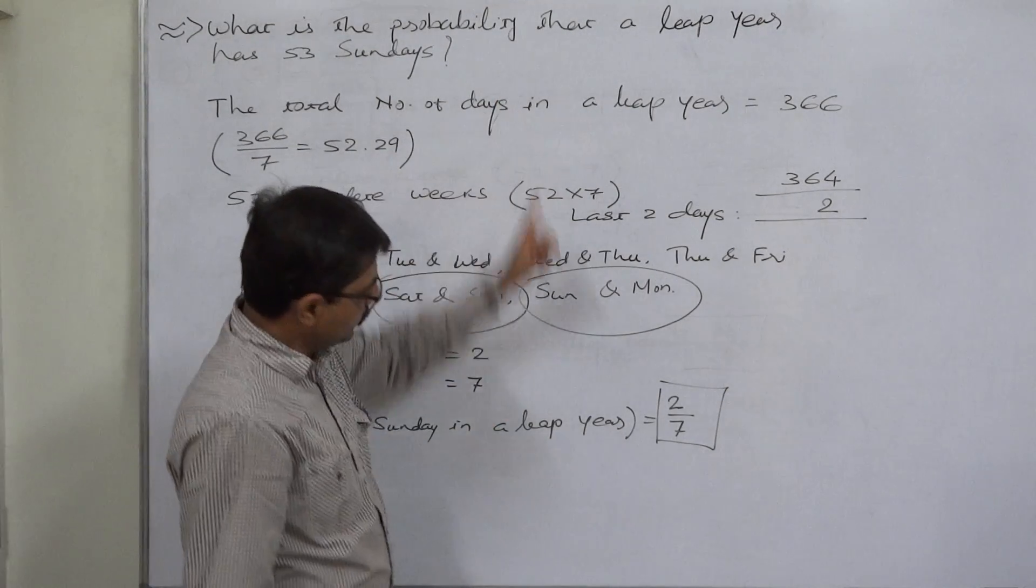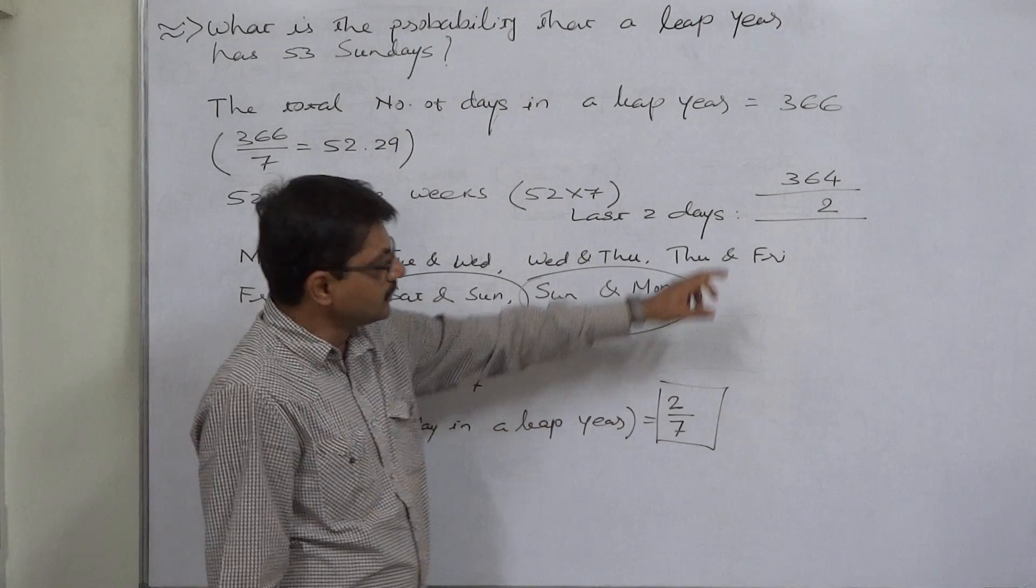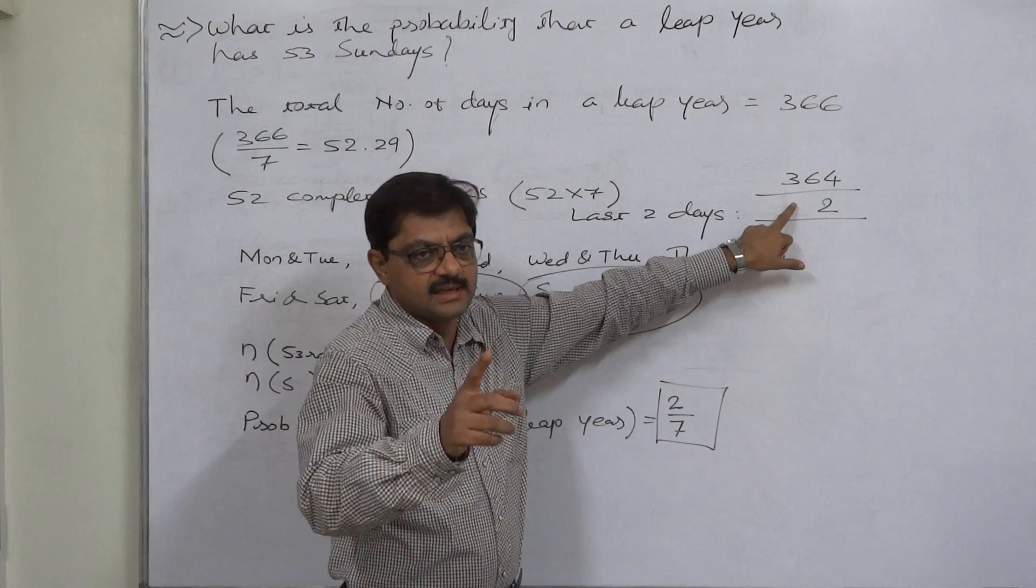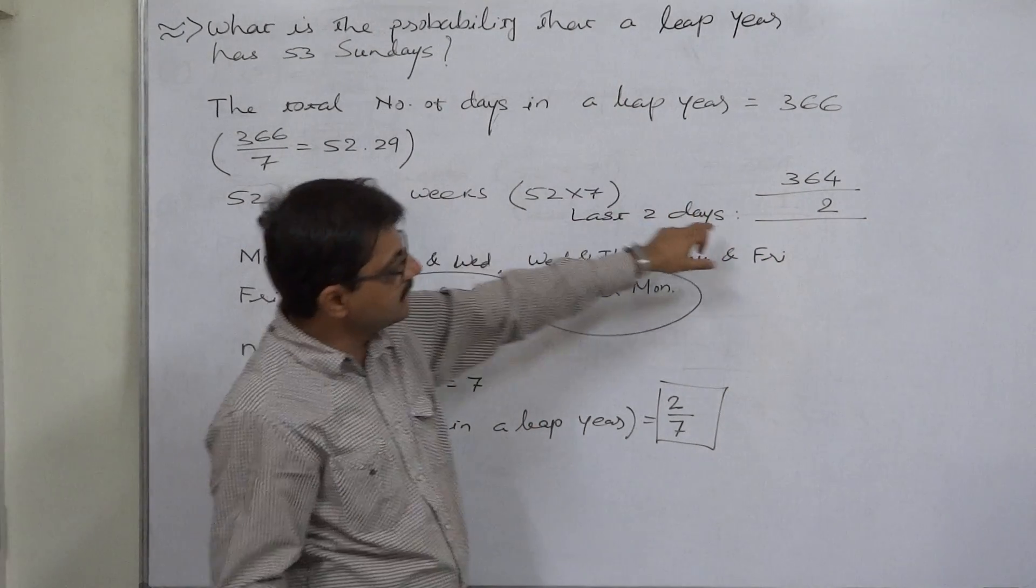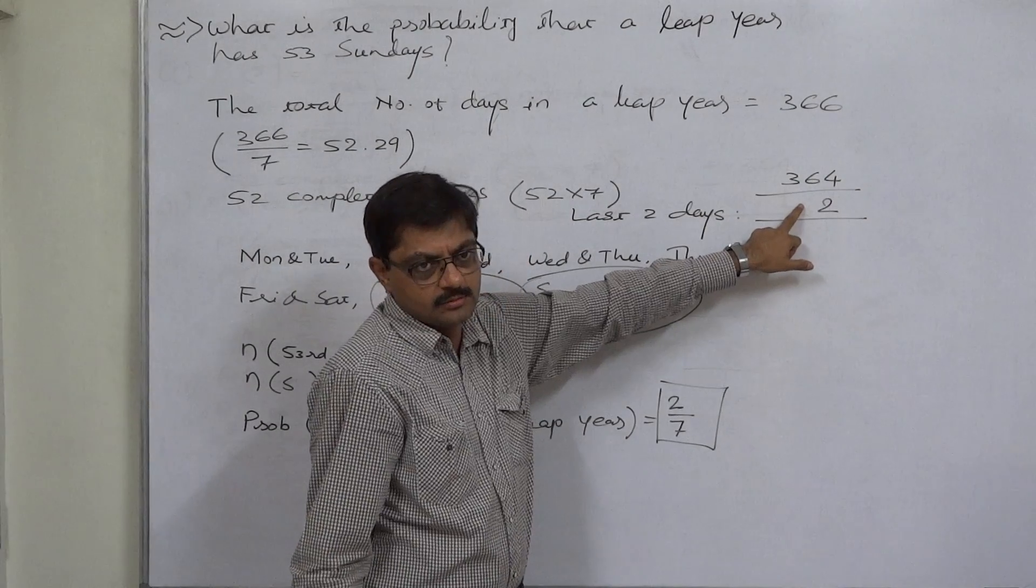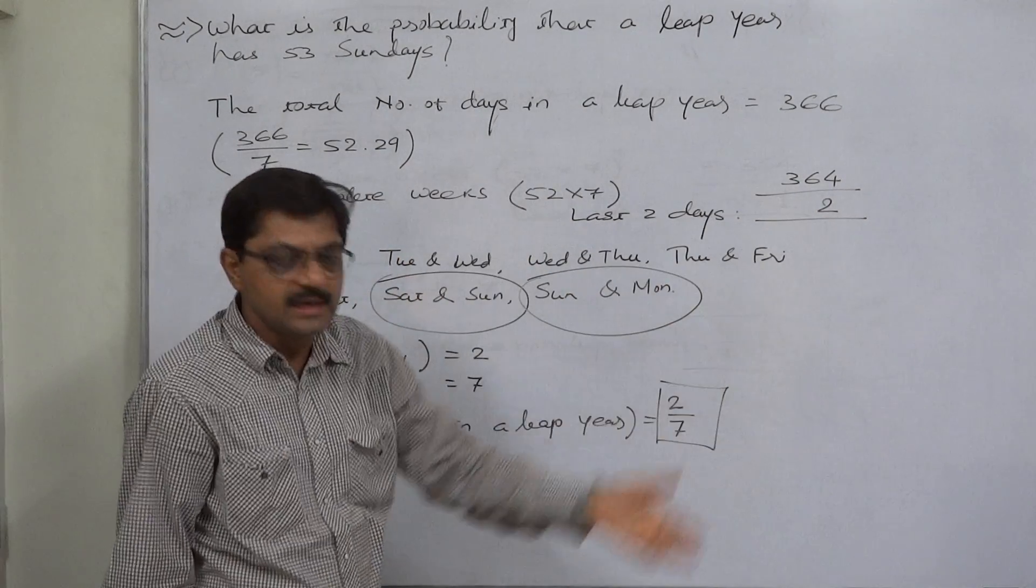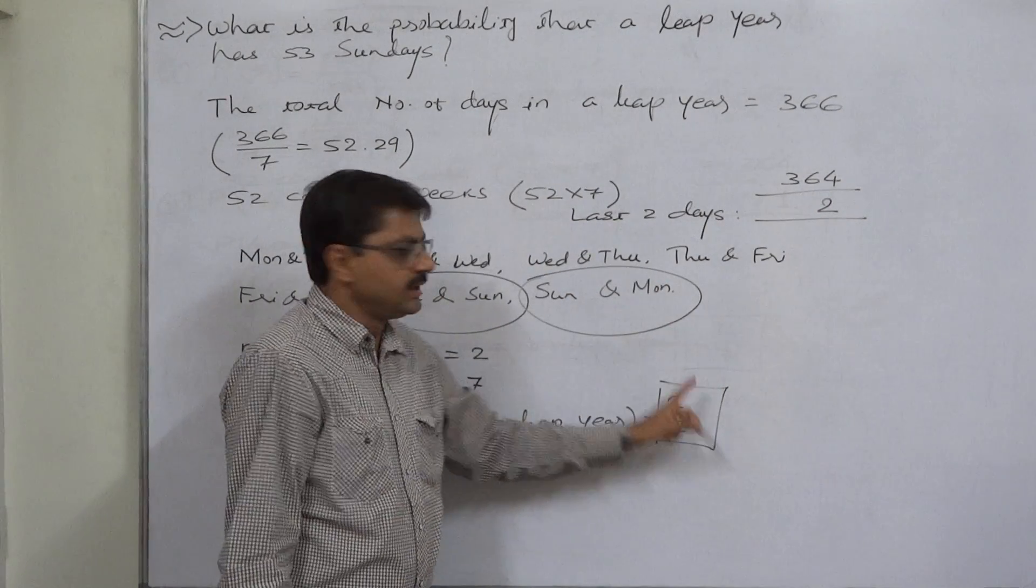In a non-leap year the probability was 1 by 7, because only one last day is there after 52 weeks. But in a leap year there are two days, so the number of favorable cases are two. In this way.